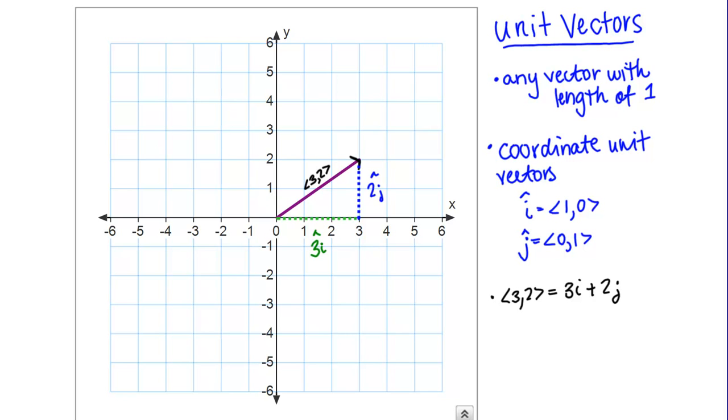Once again, why is that true? Let me try to convince you component wise. Here, remember I just said that i was the position vector <1,0> and j was the position vector <0,1>. I'm proposing that I can write this as 3i plus 2j.